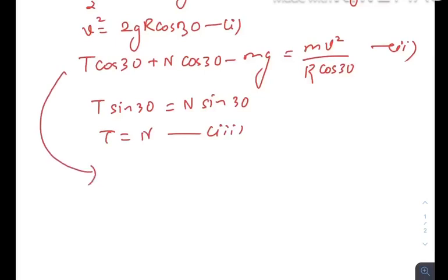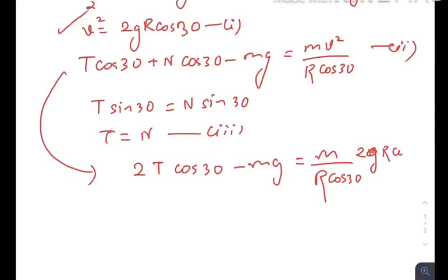From the second equation, we can write that 2 T cos 30 minus mg equals m by R cos 30. We can just plug in the value of V squared here, which is 2 g R cos 30.